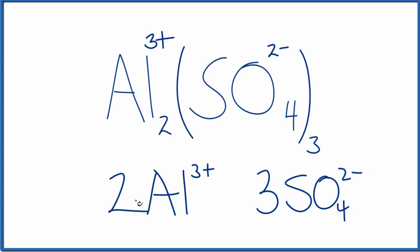So in total, we have 2 plus 3, 5 total ions in aluminum sulfate. Two are aluminum ions, and three are sulfate ions.